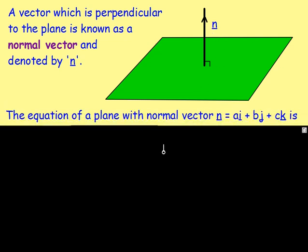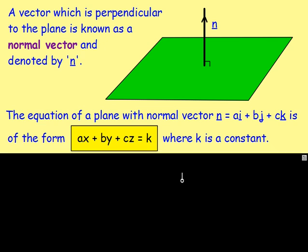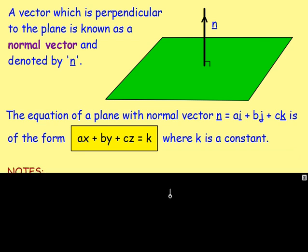The equation of a plane: if it's got a normal vector which can be written in the form ai plus bj plus ck, well the a, b, and c can be used in the equation of a plane. That will be of the form ax plus by plus cz equals k. So the a, b, and c from the normal vector — the vector at right angles to the plane — become the a, b, and c in the equation of the plane, and k is just a constant.